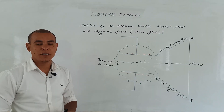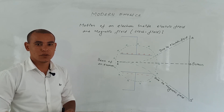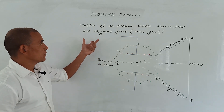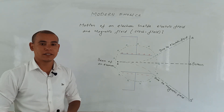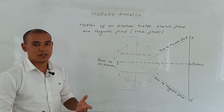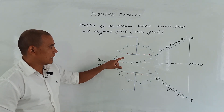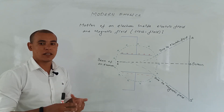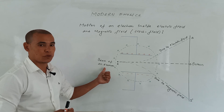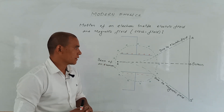I have already explained the motion of an electron beam inside electric and magnetic fields in the previous class. Now in this class, I am going to explain the motion of an electron beam inside electric and magnetic fields combined, also known as a cross field. When the electric field and magnetic field are placed perpendicular to each other, we will study what happens to the motion of an electron beam.